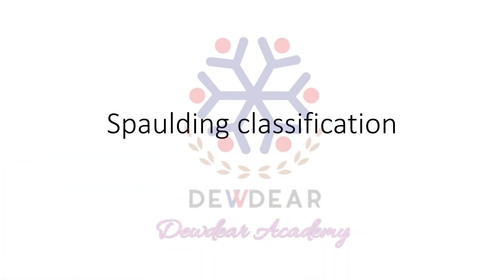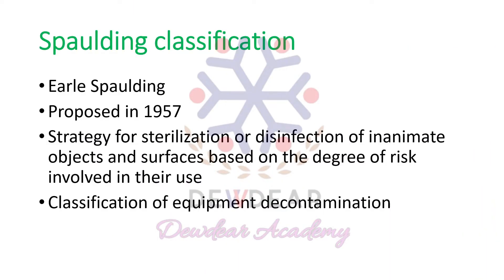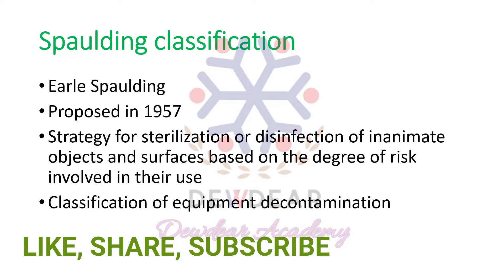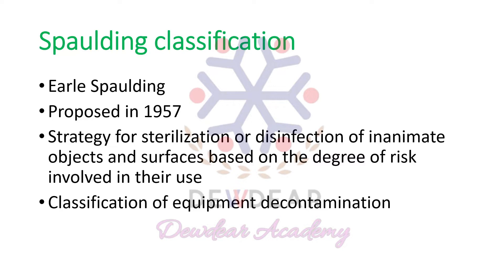So what is this Spalding classification? It was proposed by Earl Spalding in the year 1957 and it is a strategy for sterilization or disinfection of inanimate objects and surfaces based on the degree of risk involved in their use. Based on the use and degree of contamination, we are classifying equipment decontamination, sterilization, or disinfectants.